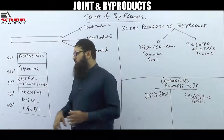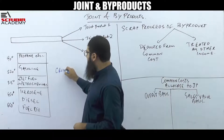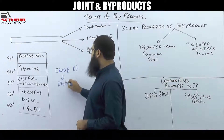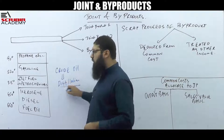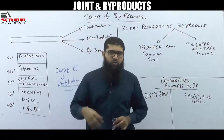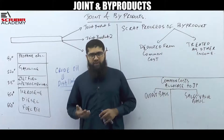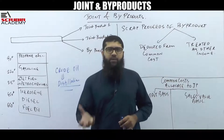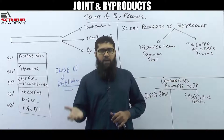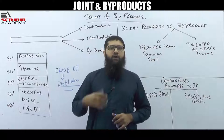To explain this concept of joint and byproduct, I have drawn in front of you a crude oil refinery and distillation process. Whenever we talk about a refinery, the crude oil is split into multiple parts using the distillation process. Under the distillation process, the crude oil is heated up in a furnace, and as the temperature goes up slowly and gradually, one by one, different components come out of that crude oil manufacturing process.